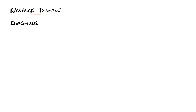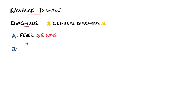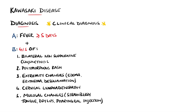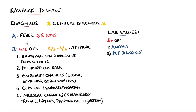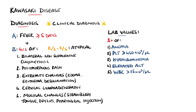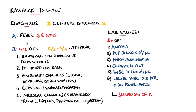Overall, Kawasaki disease is a clinical diagnosis. It must include the fever we mentioned with four out of five of the clinical findings. If only two or three of the criteria are present, then a diagnosis of incomplete or atypical Kawasaki disease is made. Lab values may aid in the diagnosis. The presence of three or more of: anemia, a platelet count above 450,000 per microlitre after seven days of fever, hypoalbuminemia, elevated alanine aminotransferase, a white blood cell count above 15,000 per microlitre, or urine with more than 10 white blood cells per high power field should raise the suspicion of Kawasaki disease.